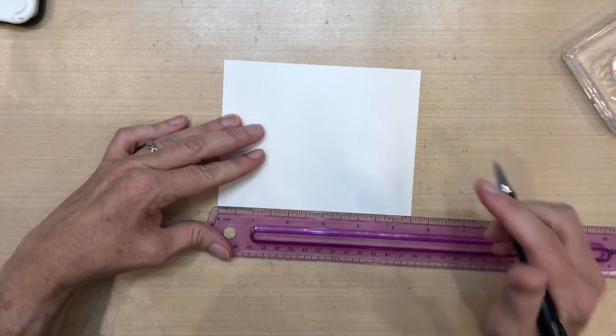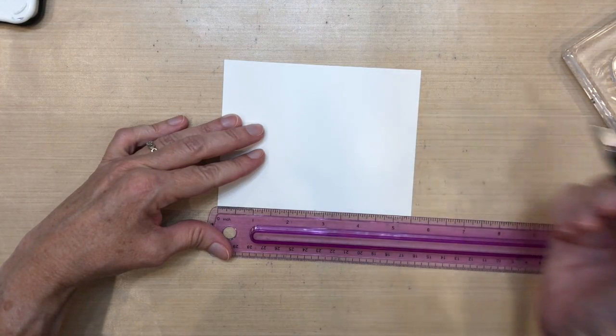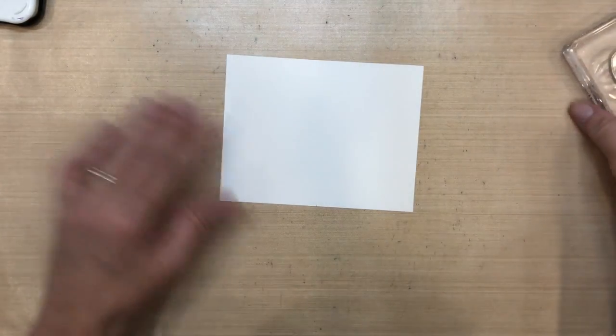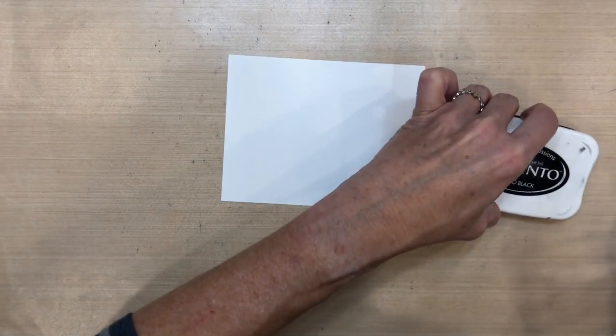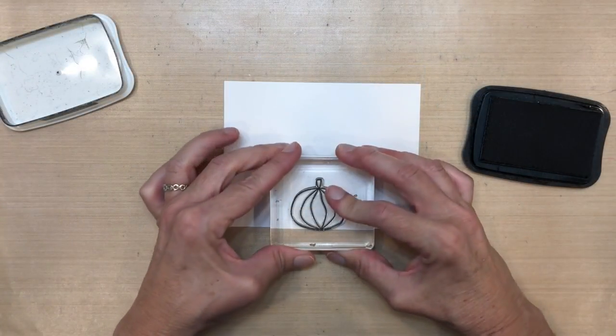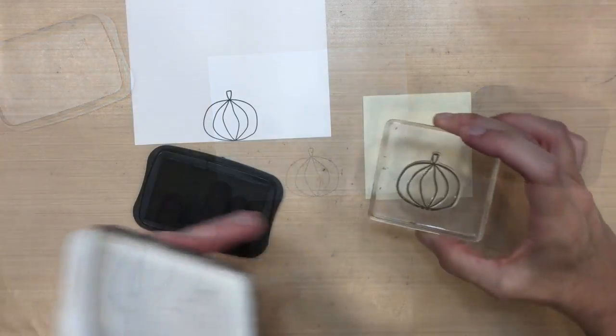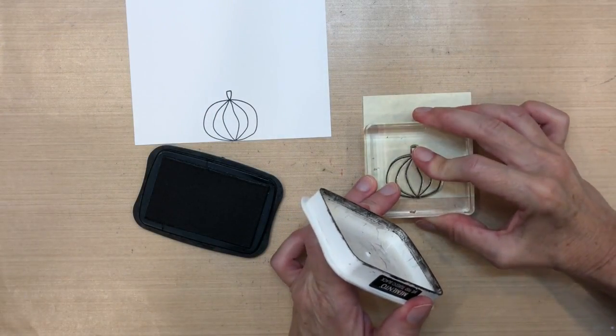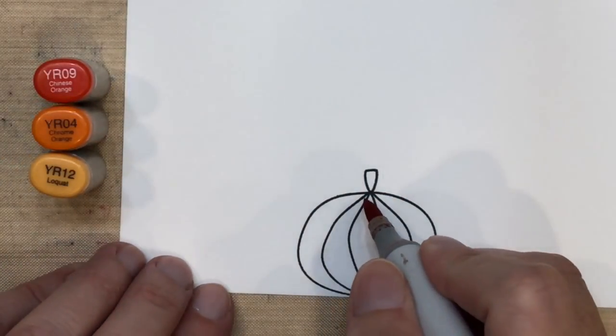I'm going to mark the center of this A2 size cardstock, this is Neenah Solar White. I'm going to stamp my pumpkin in Memento Tuxedo Black at the very bottom, and I'm also going to stamp it on a post-it so that I could use it as a mask.